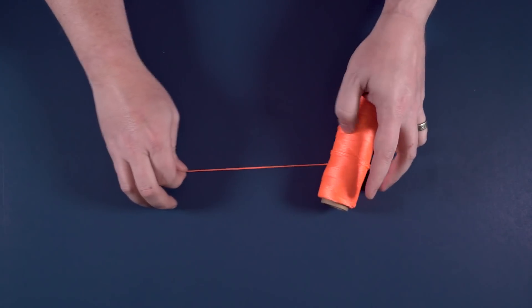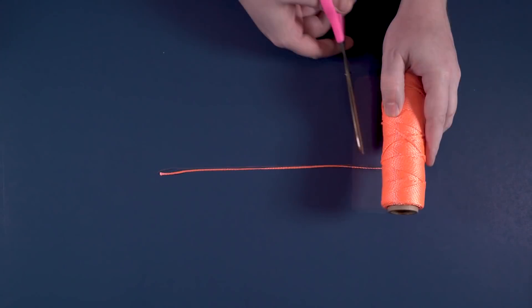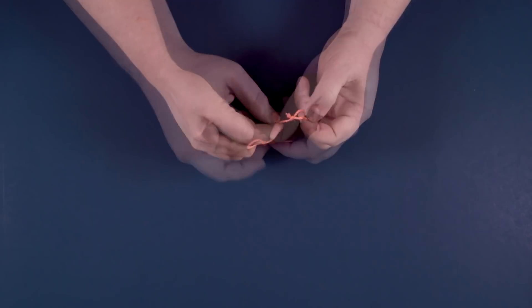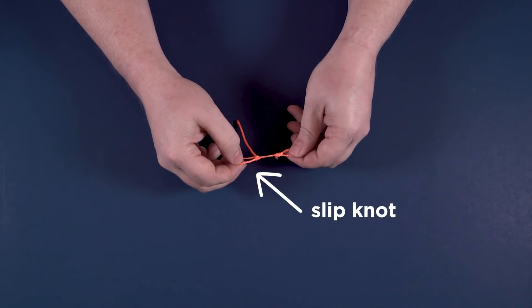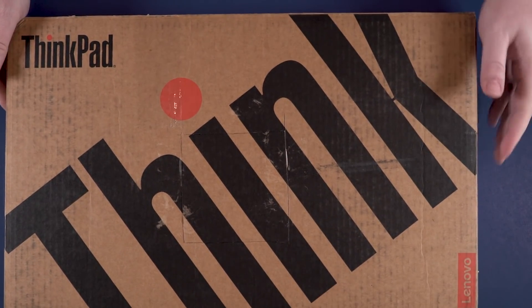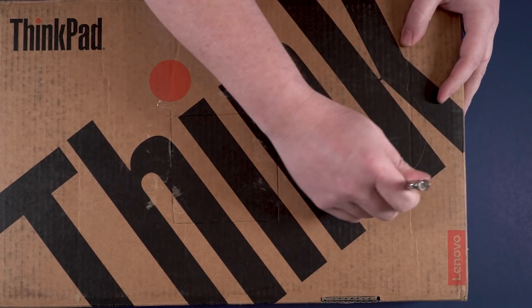So what we're going to do is start with our string first. We're just going to cut less than a foot and I'm going to make a bowline knot on one end. I'm going to do a kind of slip knot here and put it around one of my push pins. Now I'm going to take my cardboard box and draw a circle.